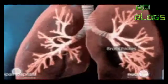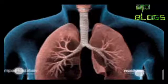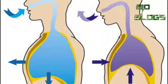The movement of air between the atmosphere and the lungs is known as ventilation or breathing. Inspiration and expiration are the two phases of breathing. Inspiration is the movement of atmospheric air into the lungs, and expiration is the movement of alveolar air that diffuses out of the lungs.